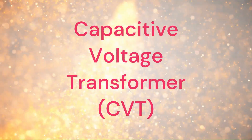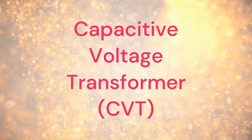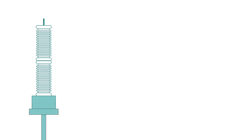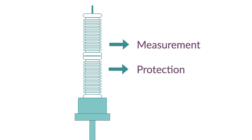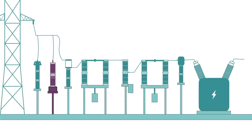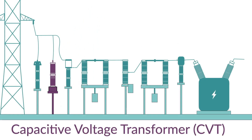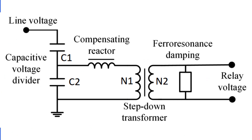Now, let's explore capacitive voltage transformers, or CVTs. CVTs are designed for precise voltage measurements, particularly in high-voltage transmission systems. They are essential for metering, monitoring, and protection in electrical systems. These transformers utilize a capacitive divider network to step down high voltages while maintaining accurate voltage ratios. As you can see in the diagram, it is a combination of a capacitive voltage divider, an inductive element, and an auxiliary transformer. The capacitor or potential divider is placed across the line whose voltage is to be measured or controlled.